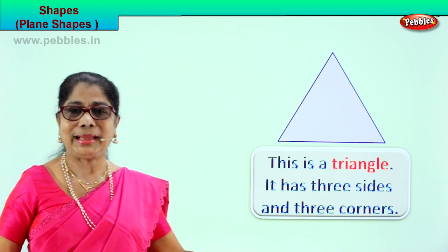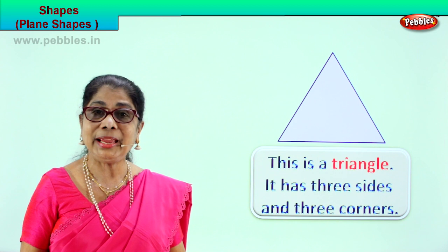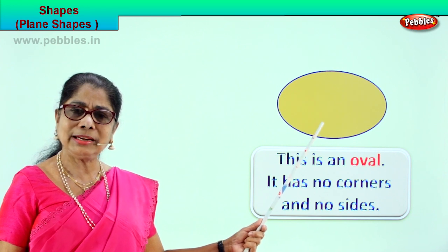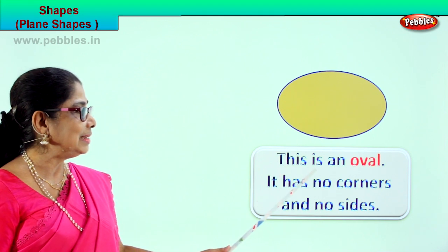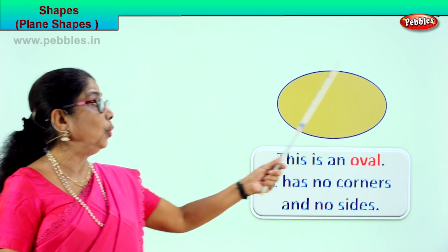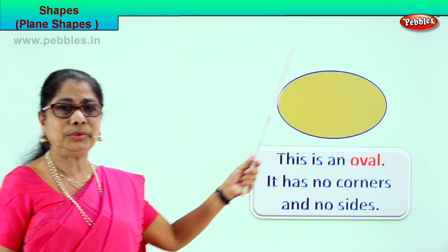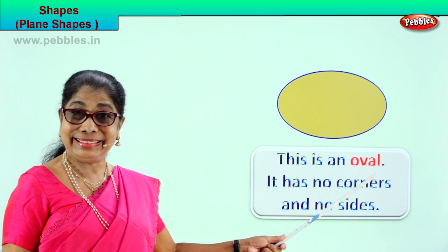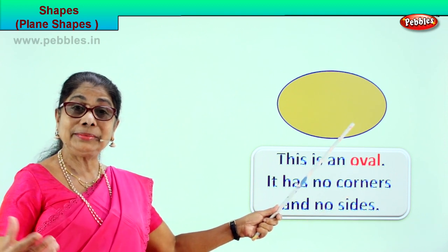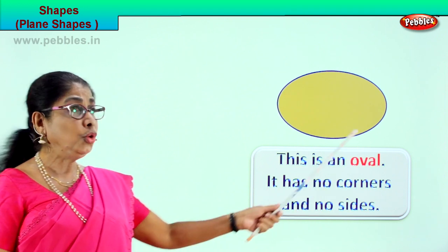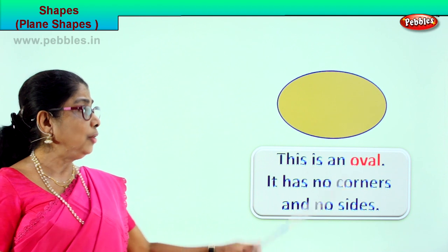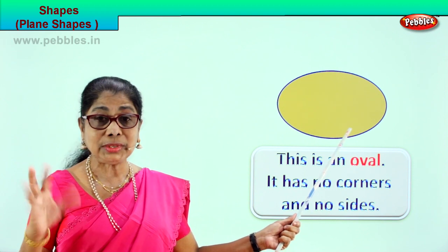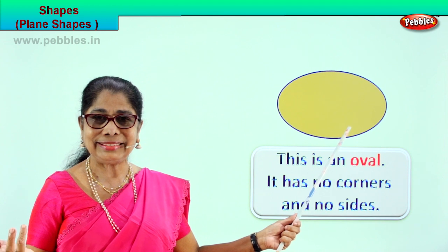Now let's look at another plane shape. What is this? Almost like the circle but it is not — this is an oval. An egg in your house looks almost like an oval shape. This is an oval. How do you describe it? It has no corners and no sides. This plate shape is called an oval — it has no sides and no corners.